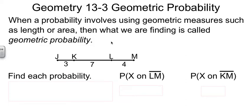When we talk about geometric probability, what we're talking about is any time that your probability involves things you can measure, like lengths, or areas, or volumes, or anything of that sort. And what we're finding is the geometric probability.